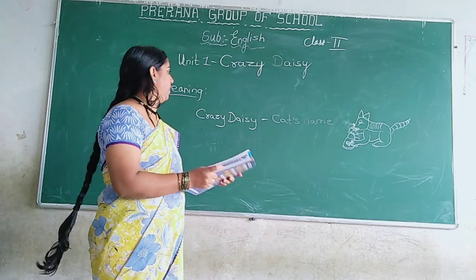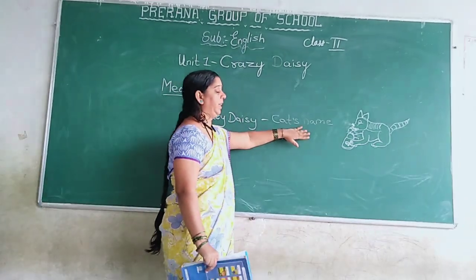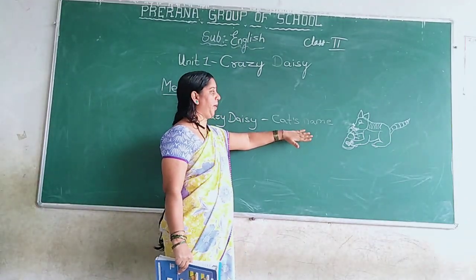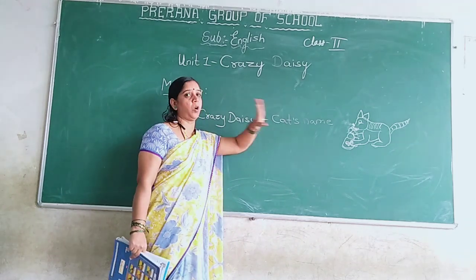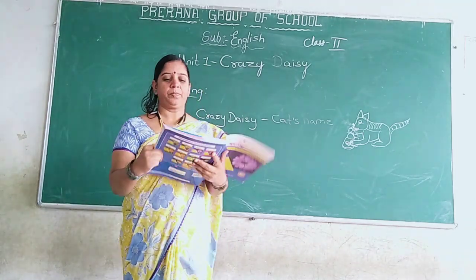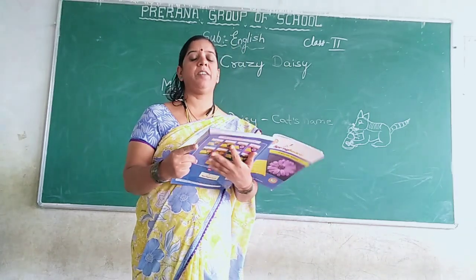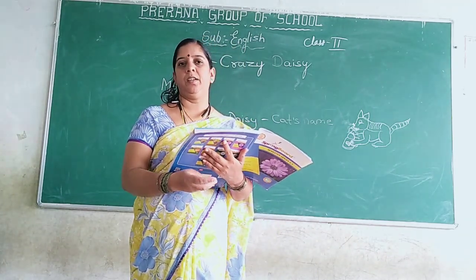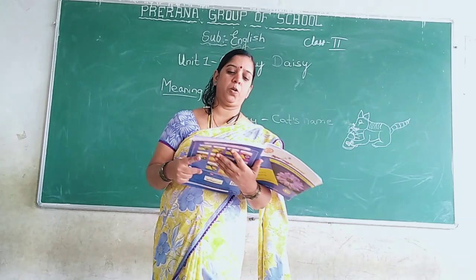Crazy Daisy is a cat's name. So the poem is about the cat and its naughtiness. All of you have seen cats are very naughty — they play with full naughtiness. So let's go through the poem.